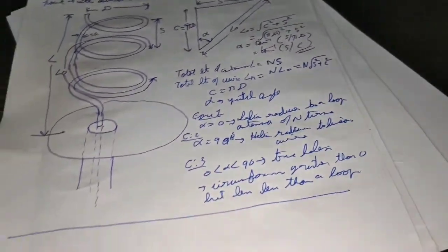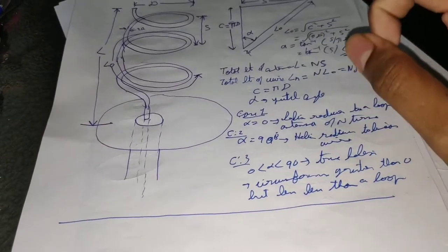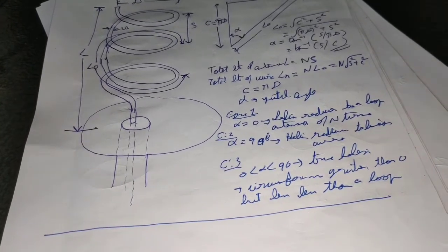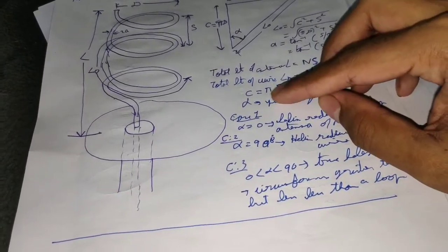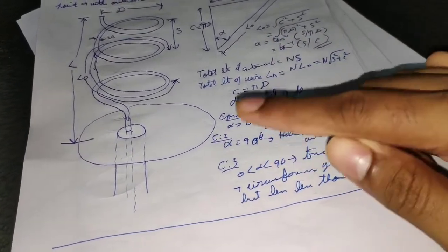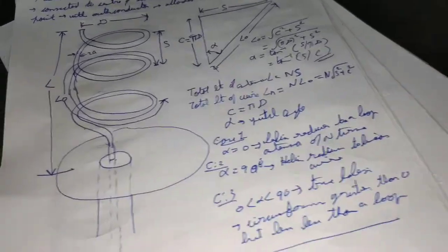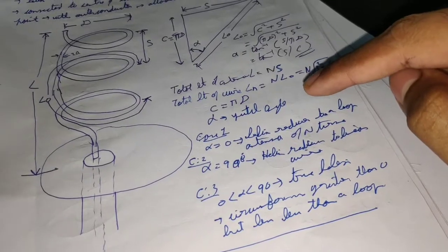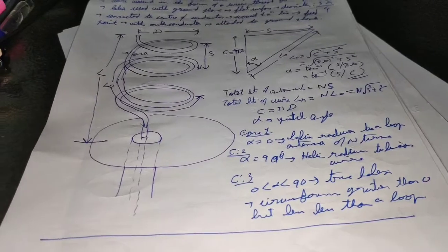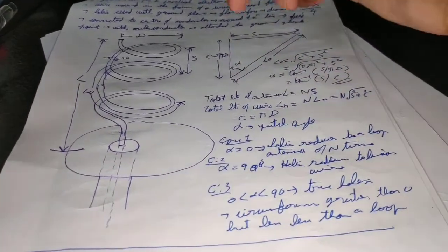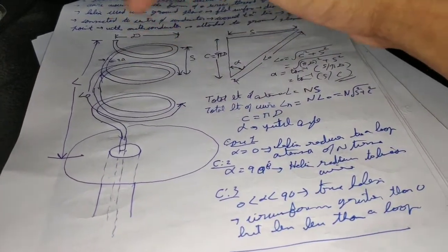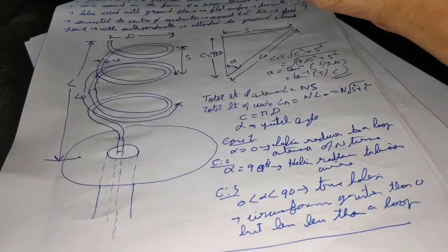Now let's consider the three cases of pitch angle α. Case one: α = 0°. When α = 0, the helix reduces to a loop antenna of N turns — the wire winds flat into multiple loops with no axial progression.